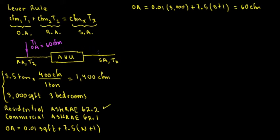The supply air CFM — since it's a 3.5-ton unit — is 1,400 CFM. And since the total is 1,400 CFM, the return air is going to be 1,340 CFM. We now have our CFMs.